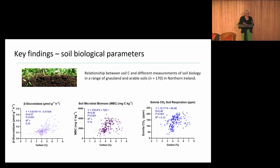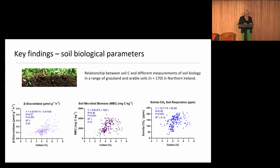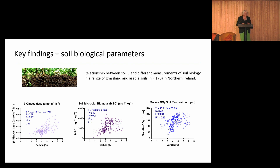Looking more broadly across the full dataset — about 170 samples across grassland and arable soils — we're seeing positive, significant relationships between beta-glucosidase, soil microbial biomass, and Solvita with soil carbon. This work is currently being written up into publications.